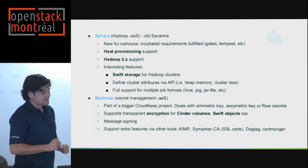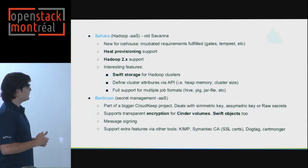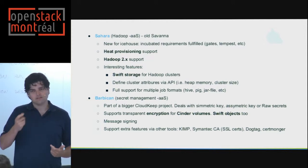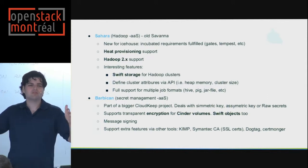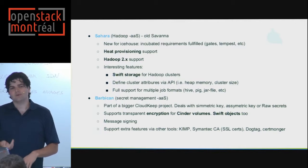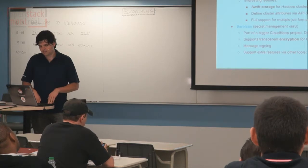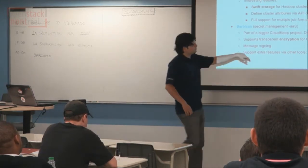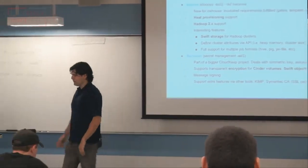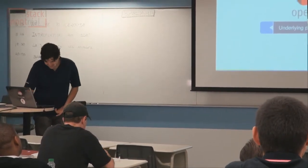Barbican is the latest incubated project — it's for secret management. You request a cryptographic key dynamically — for example, a 2048-bit key — and you receive one. You can also link it from many different systems. It's being pushed by companies that sell security software.